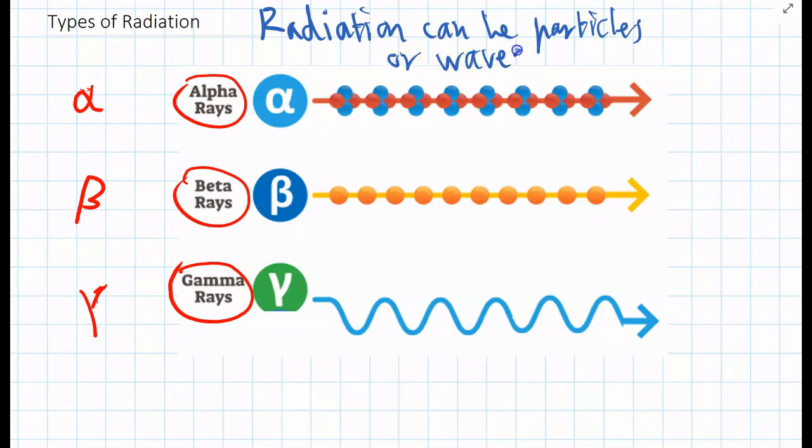Radiation can be particles or waves. So the first two we're looking at, alpha and beta, these are both streams of particles that start in that radioactive atom and then they are emitted from the atom and they fly away through space. And gamma rays, these are waves.